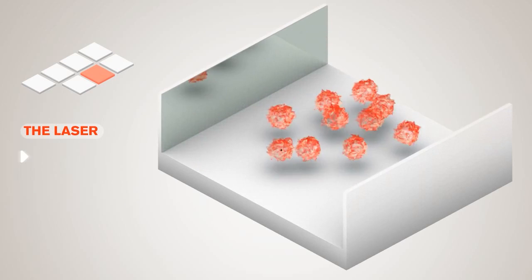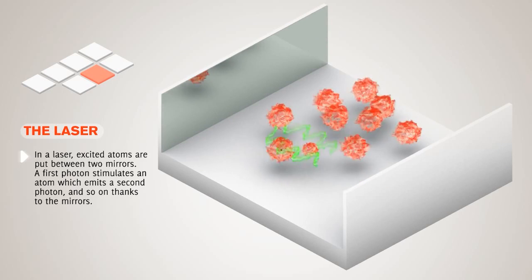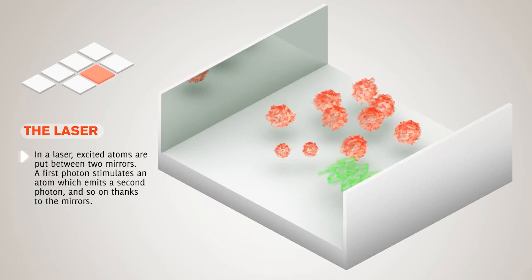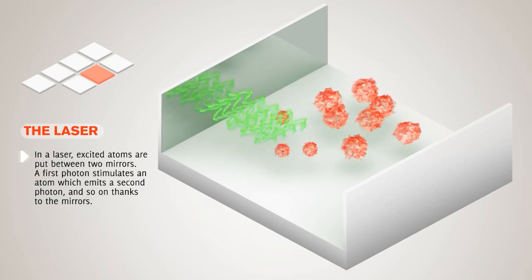A laser works by sending light into a cavity that has a gain medium inside it. The gain medium is important because it has electrons that will absorb light, and then emit light at the wavelength that we want. On top of this, the cavity has two mirrors that have a distance that matches the target wavelength, so that the light bounces back and forth and will constructively interfere.